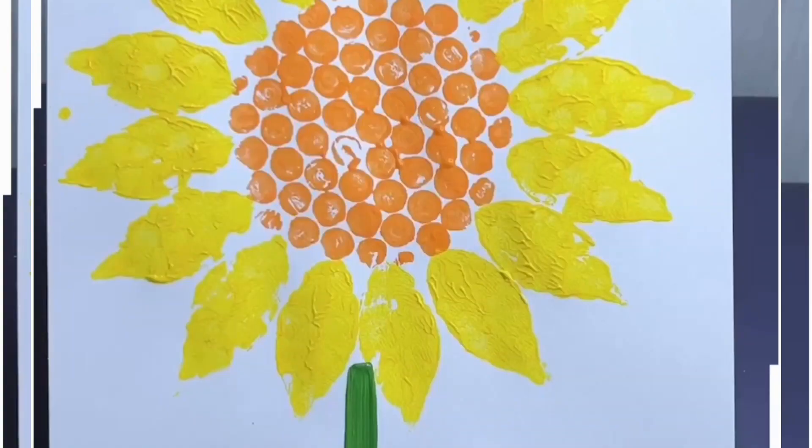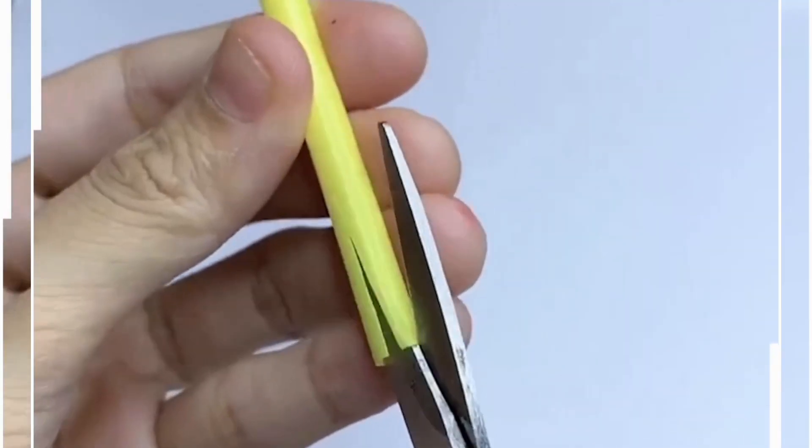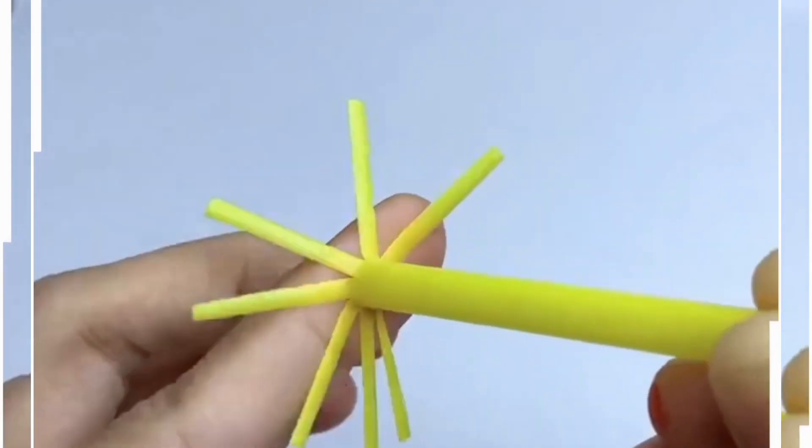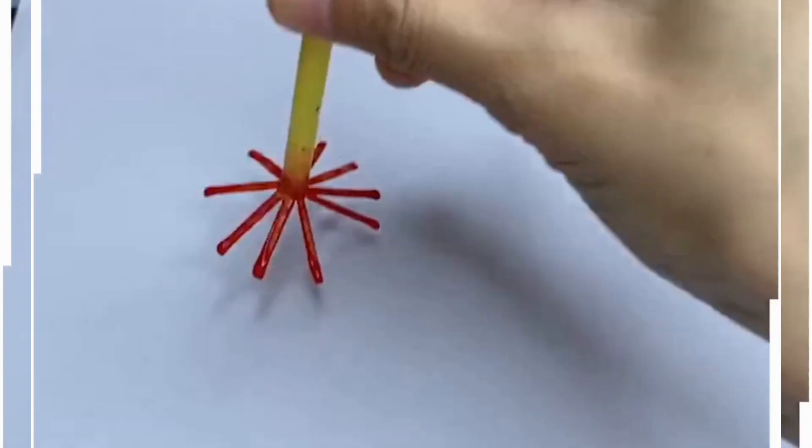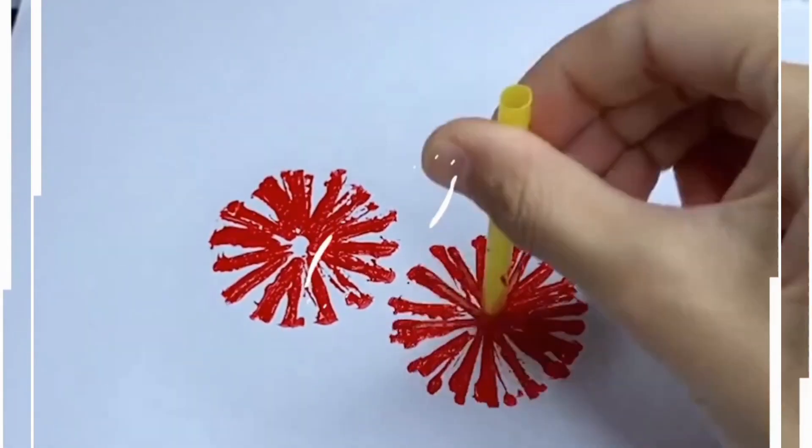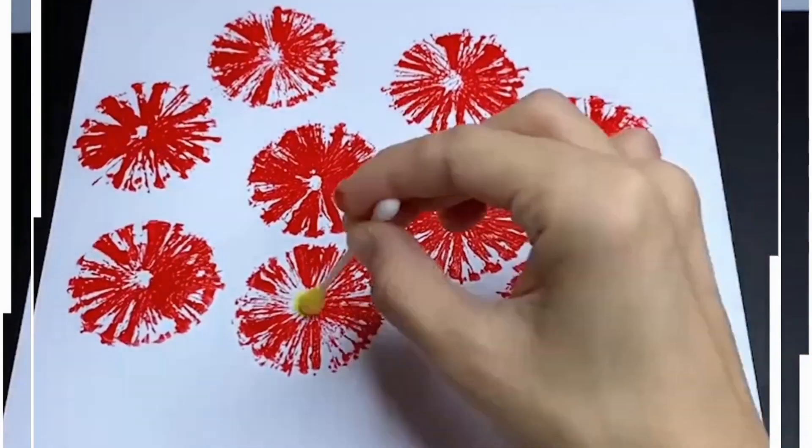Take this, draw, make multiple cuts. After this we're going to dab it on this red color and stamp it on the paper. Look how pretty these flowers are looking. You can also draw the leaves and stick using green craft paper.